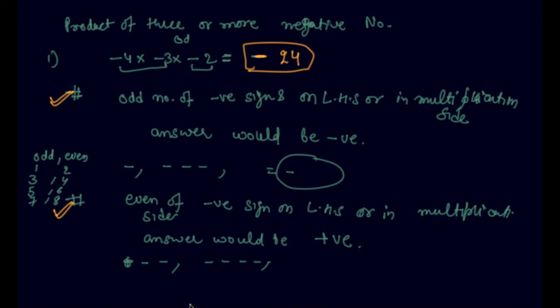I hope you are clear about how to multiply three integers or a mix of integers, whether they are positive, negative, or anything. If you still have any doubt or query based on this lecture, please comment in the comment section and I will be happy to help. Thank you.